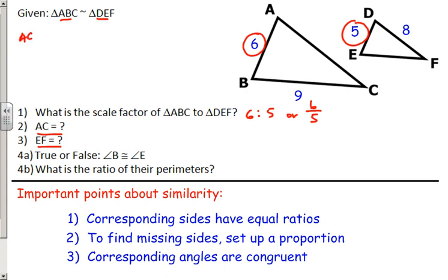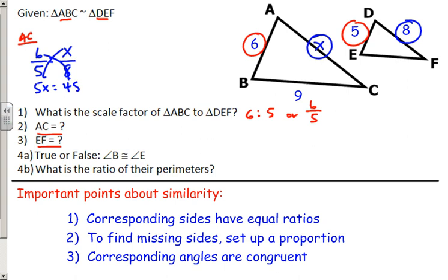To find AC, I'll call it X. AC corresponds to 8, so X corresponds to 8. We already know 6 corresponds to 5, so the proportion is 6 over 5 equals X over 8. Cross multiplying: 5X equals 48. Dividing both sides by 5 gives X equals 9.6. So AC equals 9.6.